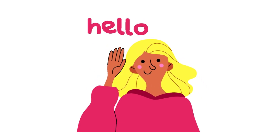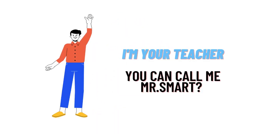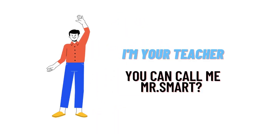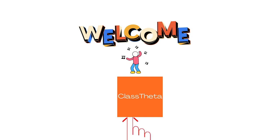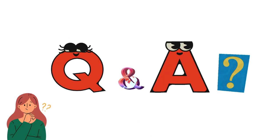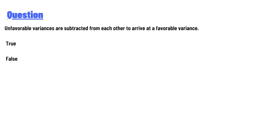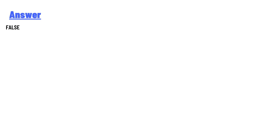Hello everyone, I am Akrash, your teacher here. I welcome you on classtheater.com. Our today's question is: unfavorable variants are subtracted from each other to arrive at a favorable variant — true or false? The answer is false.